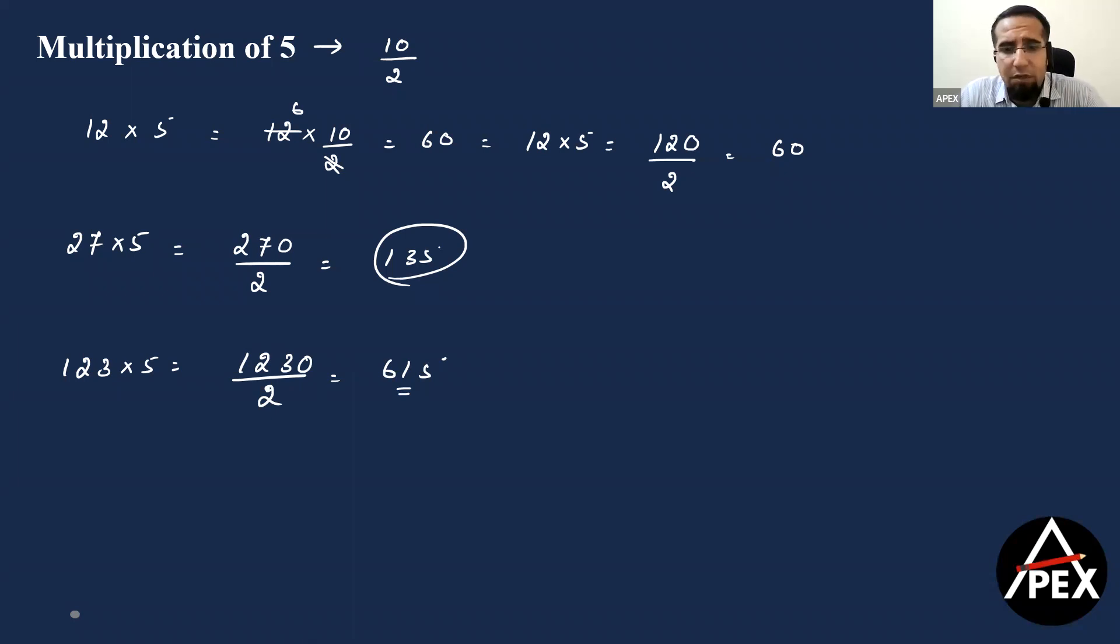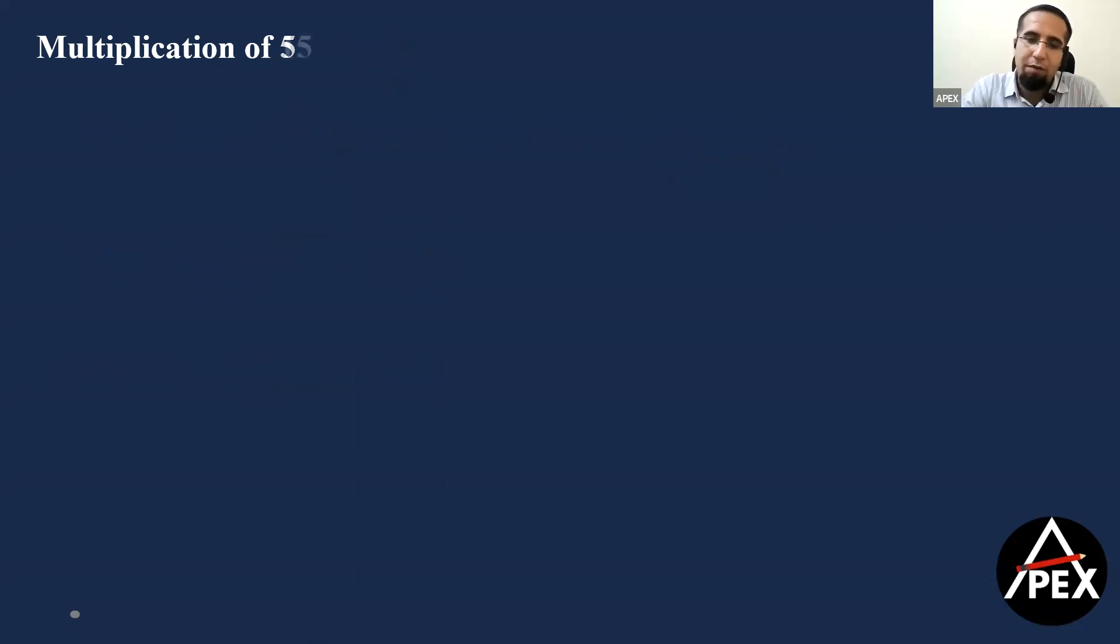As I told you, in CAT examination, they generally do not ask you multiplication of 5, but they make your job easier. They give you multiplication of 15. We'll be applying the distributive law of mathematics. What is distributive law? I'm distributing the number. Suppose I'm asked 18 into 15. I can write this as into 10 plus 5. This is what I'm distributing, 15 to be 10 plus 5.